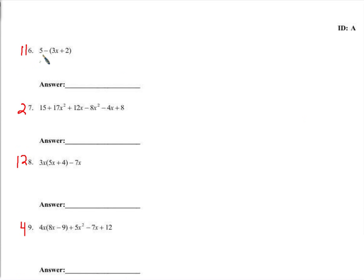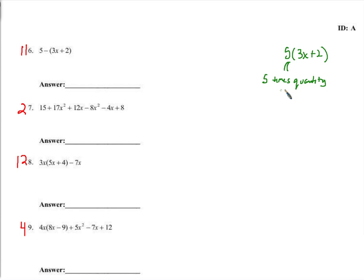Let's read it out loud. If I were to distribute a five, it would look something like this — it would say five times quantity 3x plus two. That's what it would say. If it had vocal cords and could speak, it would say five times 3x plus two.